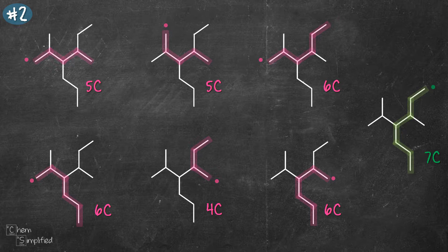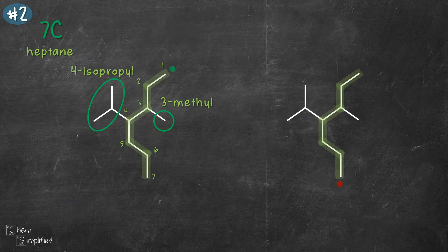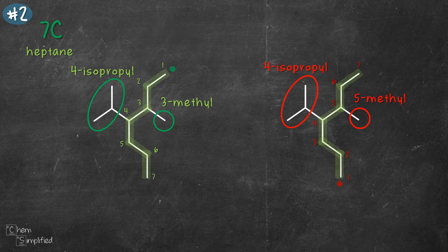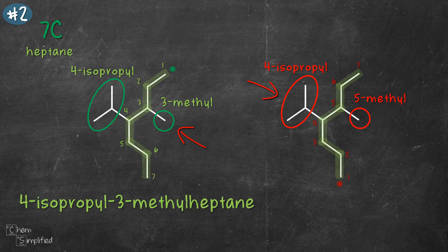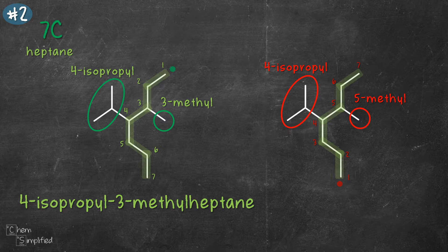Let's number the chain. Numbering from the top gives us two substituents: one at carbon 3 and one at carbon 4. Numbering from the bottom also gives two substituents — 4-isopropyl and 5-methyl. We want to start counting from the end nearest to the substituent, so we go with the green numbering because 3 is lower than 4. The compound's name is 4-isopropyl-3-methylheptane. Isopropyl comes before methyl because I comes before M alphabetically — both substituents are equal in priority, so we alphabetize them.